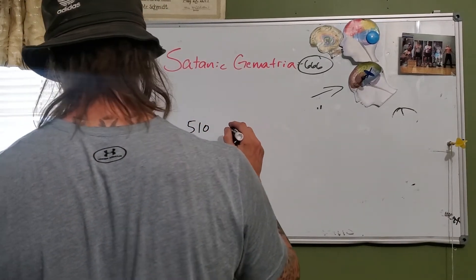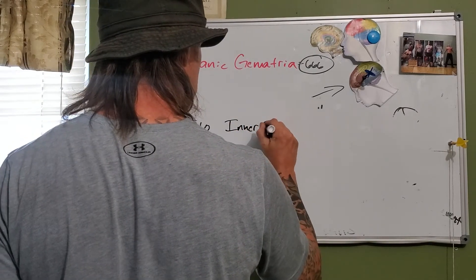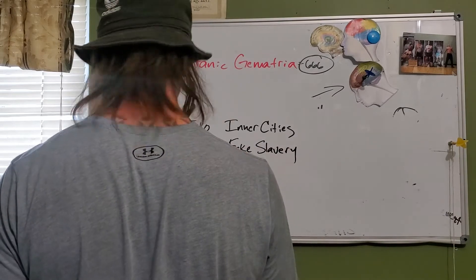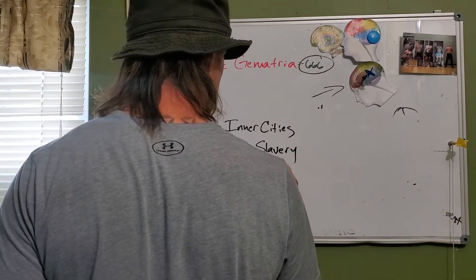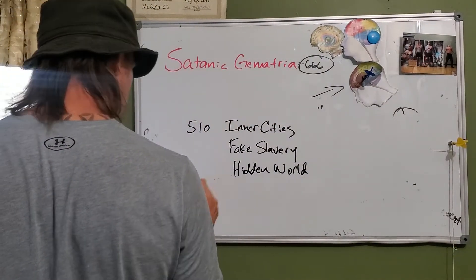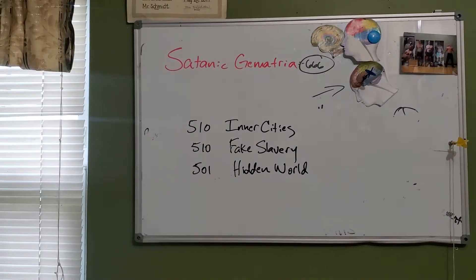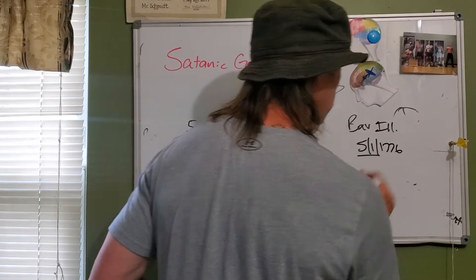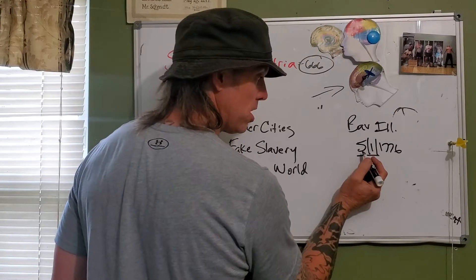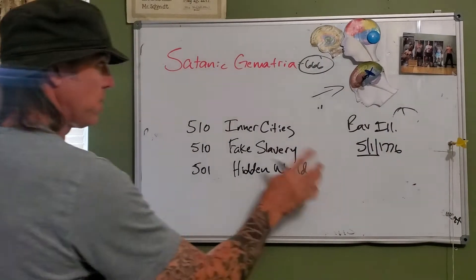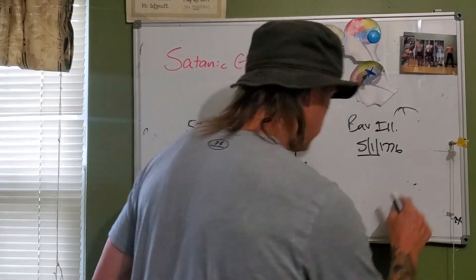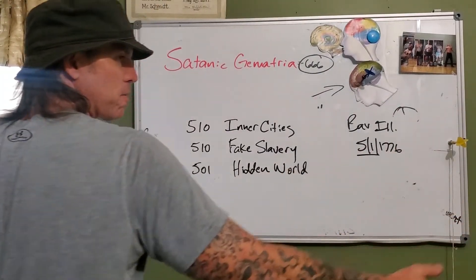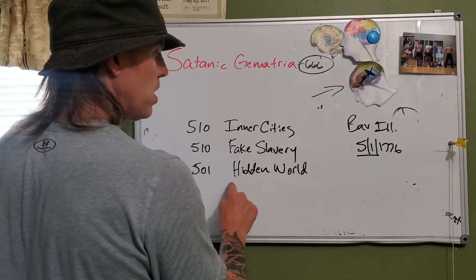These are all in satanic gematria. I'm going to go over a few: inner cities, fake slavery, hidden world. You've got to know who the Bavarian Illuminati is — you can Google it. They were founded on May 1st, 1776. The Georgia election for the fake stuff was on the 5th of January. The inner cities are the plantations — we've built this machine because they gave us fake money.